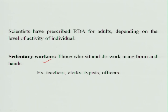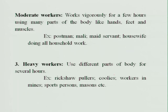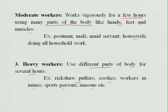There are sedentary workers, moderate workers, and heavy workers. Sedentary workers sit and use their brain and hands — professionals who work at a table, such as teachers, clerks, typists, and officers. Moderate workers work vigorously for a few hours using many parts of the body like hands, feet, and muscles — for example, postmen, Mali, maidservants, and housewives doing household chores. Heavy workers use all parts of their body for several hours — like rickshaw pullers, coolies, workers in mines, ports, and masons. These groups have different nutrient requirements.